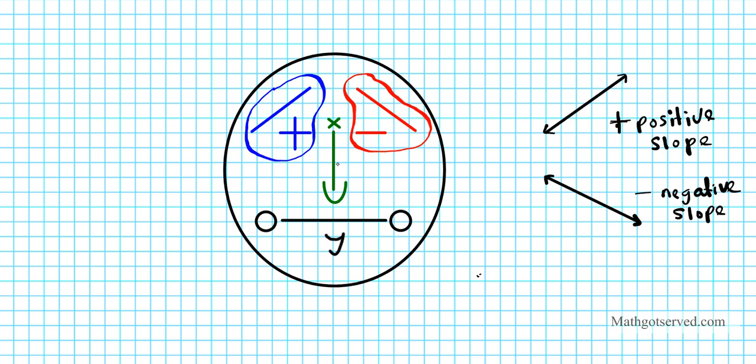Just remember when you're drawing your Mr. Slope Guy, the eye to the left is always plus. You always start with a plus first and then a minus, with this eye going up and this eye going down.